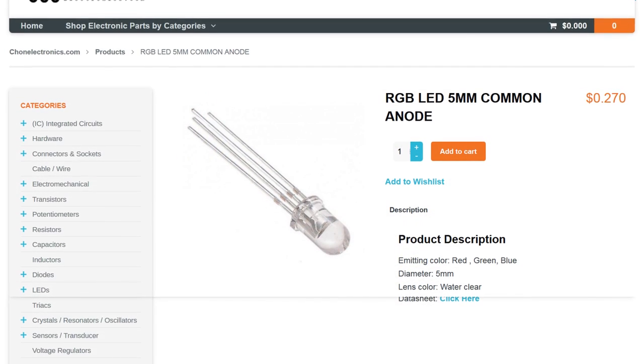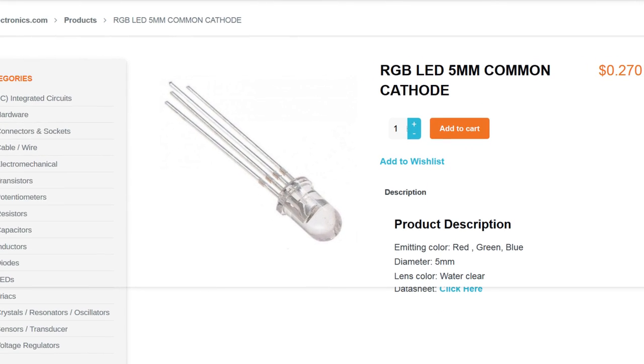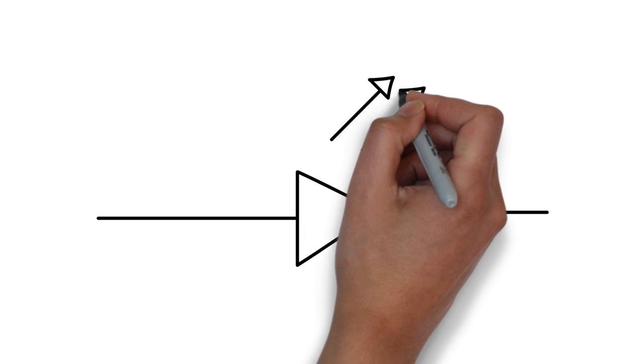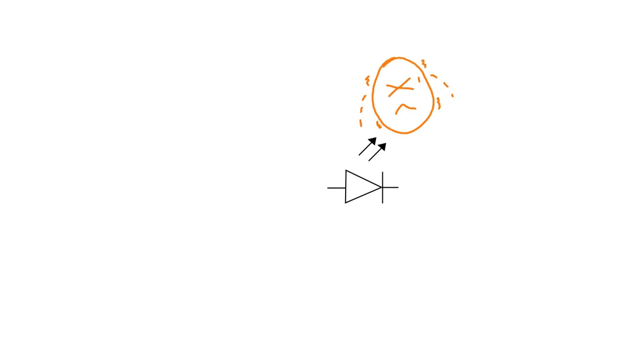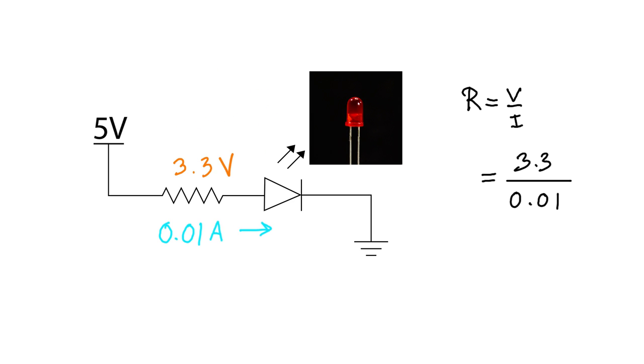There's also RGB LED, that combines red, green, and blue into a single package. Here is the schematic of a LED. A LED is almost always connected in series with a resistor to protect the LED from damaging. Check out my resistor video on how to calculate the resistor value to be used with a LED.